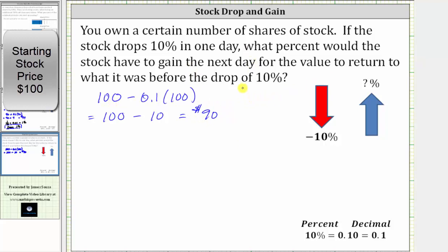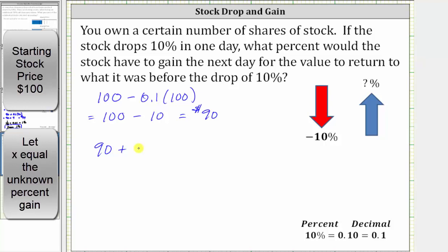Now we'll determine what gain is needed to return the stock price to $100 the next day. To do this, we begin with the reduced price of $90, and then we'd have plus some unknown percent times $90. Let's let the unknown percent be equal to x, which gives us x times $90, and this must equal the original share price of $100.